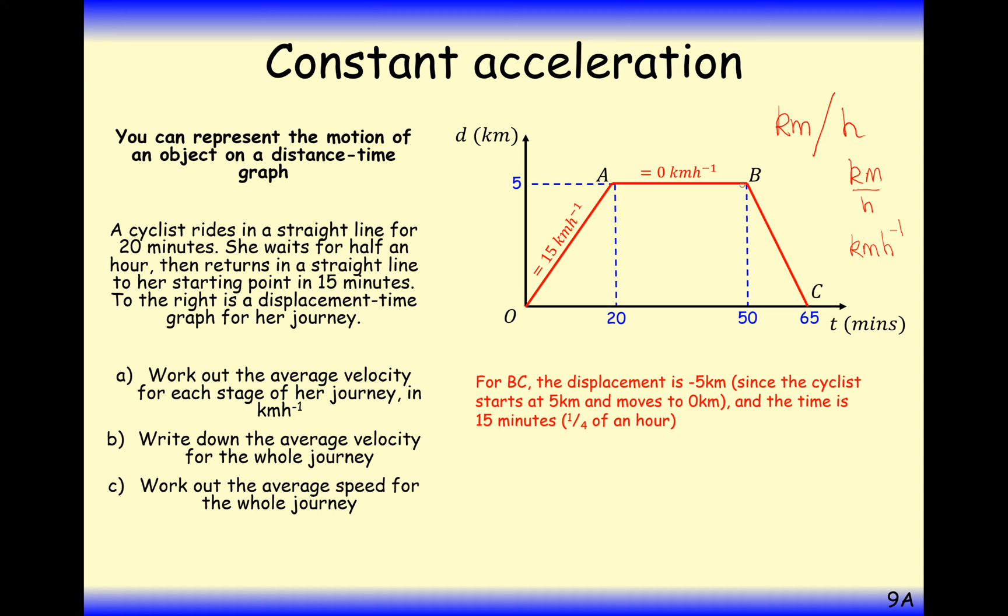For the next part, she has traveled in the opposite direction. That's a negative displacement. So the displacement is minus five kilometers traveled in one quarter of an hour, 15 minutes. Make sure you've got the units spot on there. So she's traveled at minus 20 kilometers per hour. That's her velocity. If you imagine real life, that's just traveling at 20 kilometers per hour. But as she's traveling back to where she started from, in the negative displacement direction, then it's minus 20 kilometers per hour.